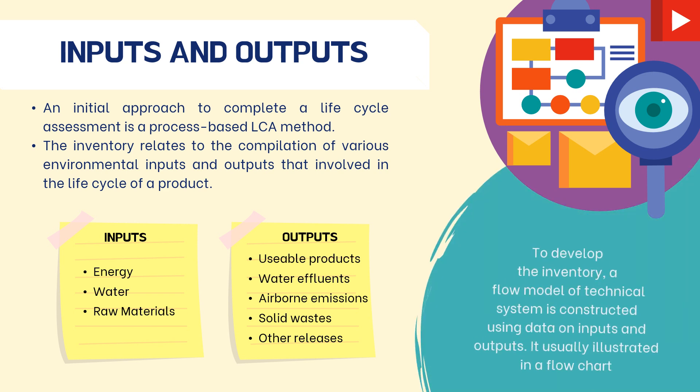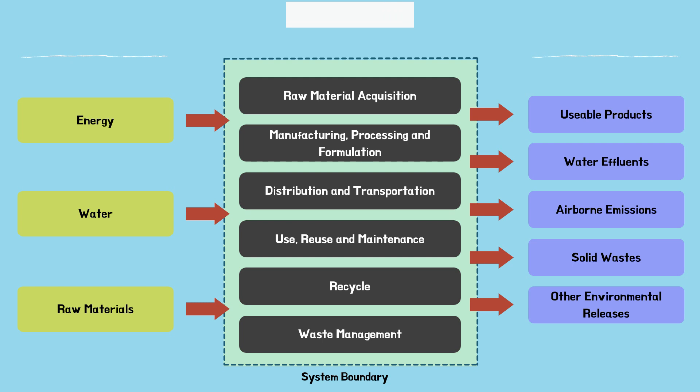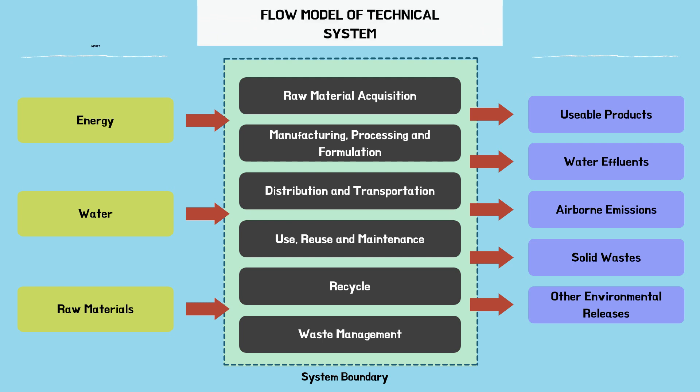On a real basis, to develop the inventory, a flow model of a technical system is constructed using data on inputs and outputs, and is usually illustrated in a flow chart. This simple example of a flow model of a technical system consists of inputs and outputs. LCI analysis is defined by ISO as the phase of life cycle assessment involving compilation and quantification of environmental inputs and outputs for a product throughout its life cycle. This model indicates a typical process flow diagram with generalized unit processes such as raw material acquisition, manufacturing, processing and formulation, distribution and transportation, and so on.